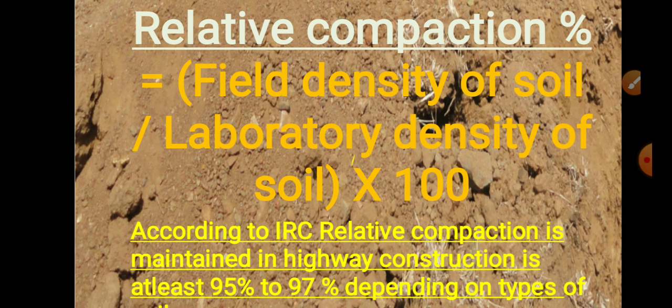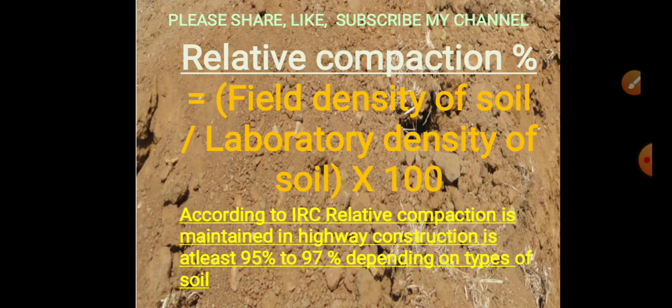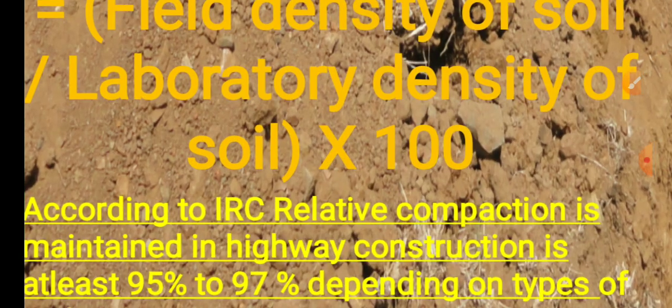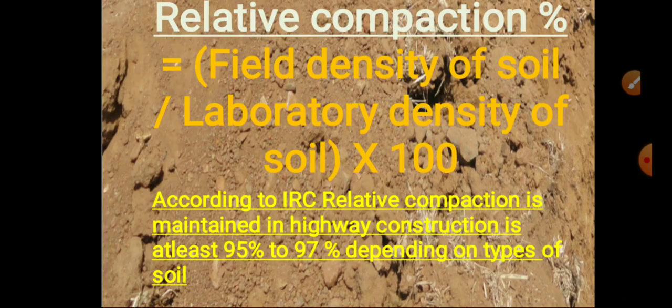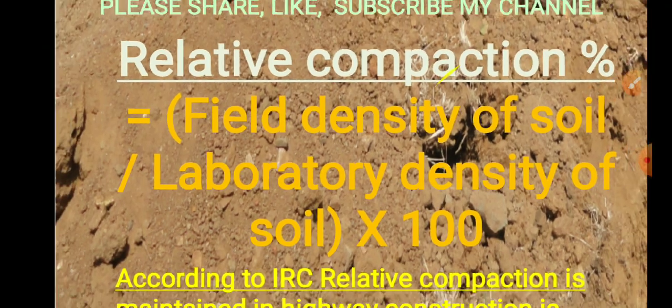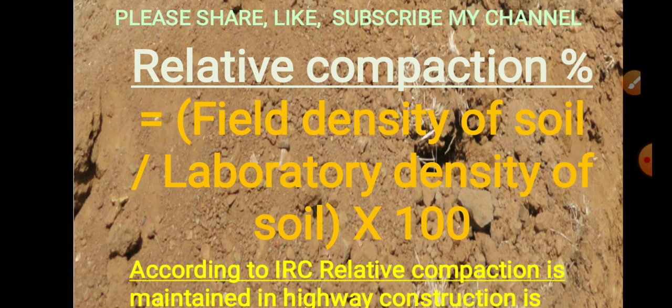According to IRC, the relative compaction maintained in highway construction is at least 95 to 97 percent, depending on the type of site. The minimum relative compaction that should be achieved at the site is 95 to 97 percent.